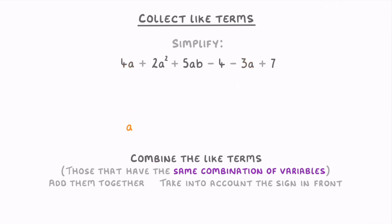Meanwhile for the number terms, you have to do minus 4 plus 7, which is plus 3. Then once you've combined all the like terms like this, you need to add the terms that couldn't be combined. So as well as the plus 3, we also add the 2a squared and the 5ab.